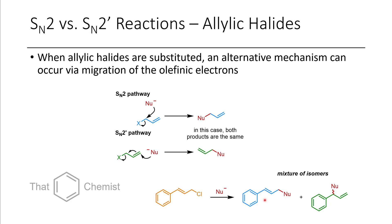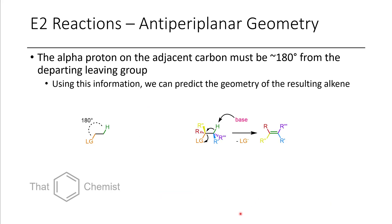Now looking at E2 reactions: if we're trying to do an elimination reaction, the proton on the adjacent carbon needs to be 180 degrees apart from the leaving group for elimination to occur. The useful thing about this is that if we have substituents on those two carbons, we can actually predict the geometry of the resulting alkene when having a typical E2 anti-periplanar elimination. There are some types of eliminations in organic chemistry which don't occur via anti-periplanar geometry and give different geometry olefins, but E2 eliminations will typically occur via anti-periplanar geometry.